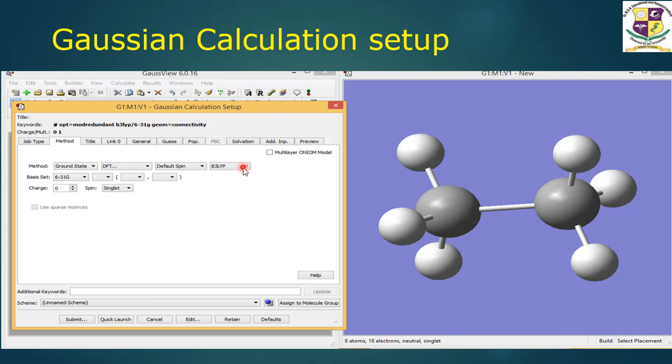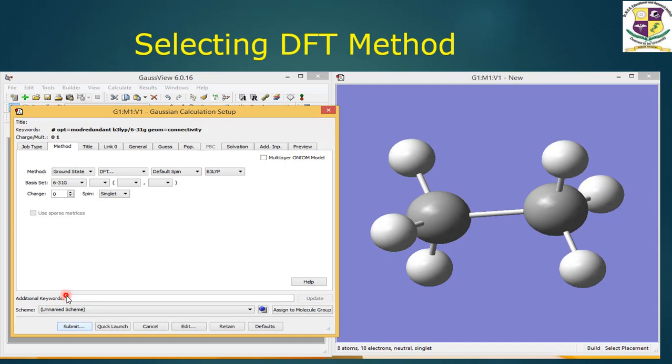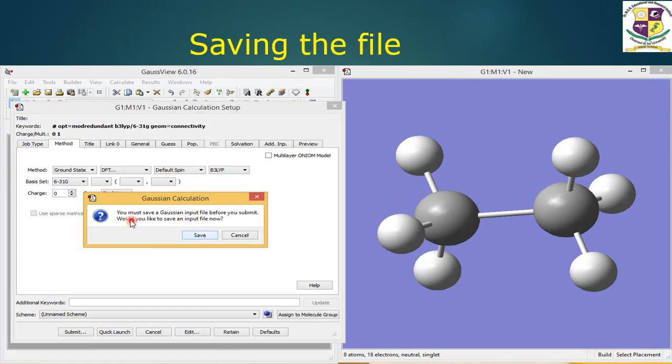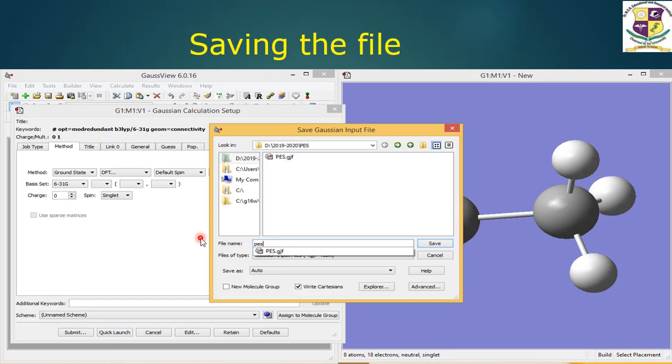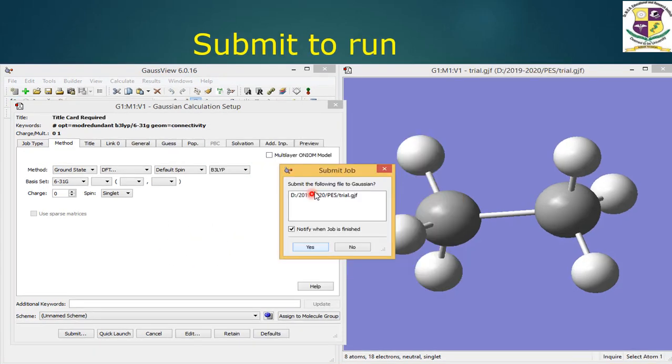In that method, B3LYP method I have selected and the basis set 6-31G. Of course I have been gone for polarization otherwise you could have selected the polarization. Now you can submit. Once you have given the submit, you will get a save file. You can save your file in your preferred folder and then you can submit the job.